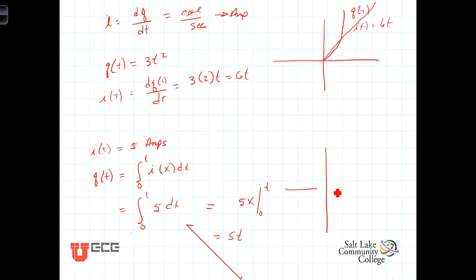So, let's look at the graph of that. Now, we're given I. I is a constant 5 Coulombs per second. You've got the rate at which the charge is changing is 5 Coulombs per second.